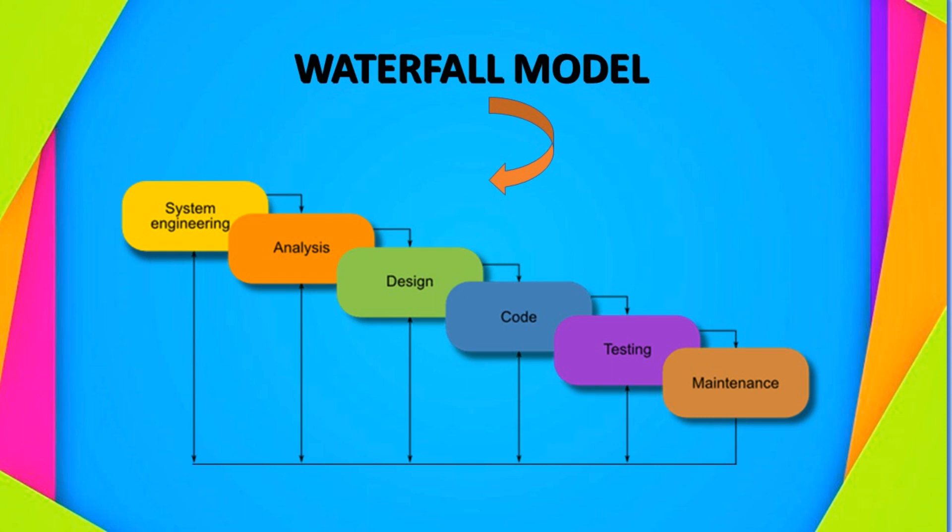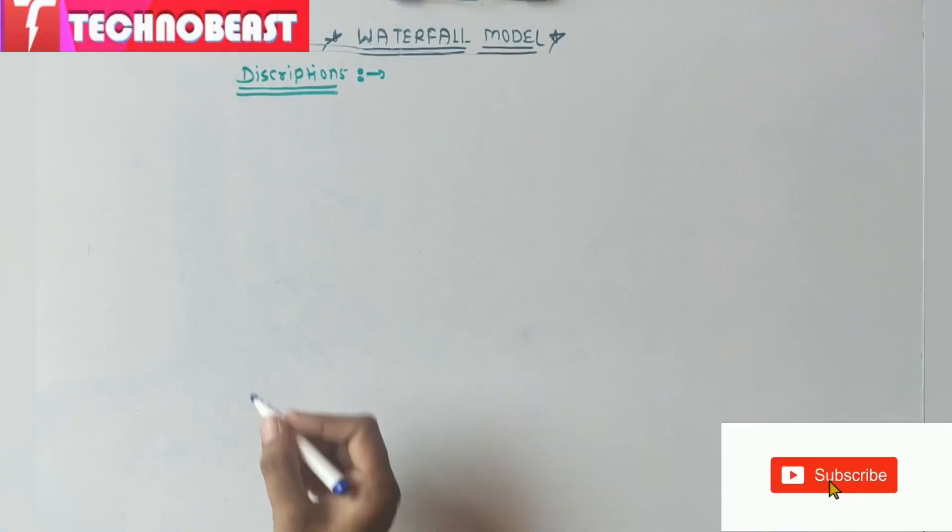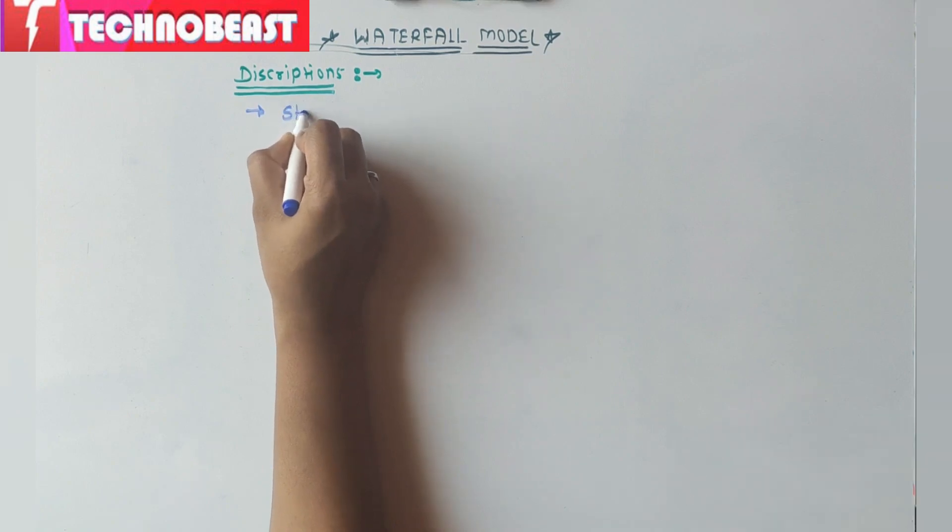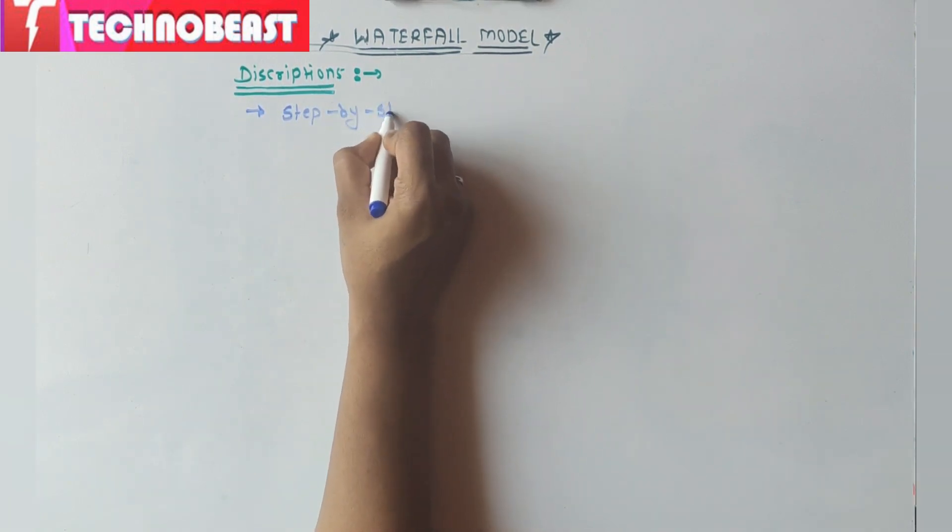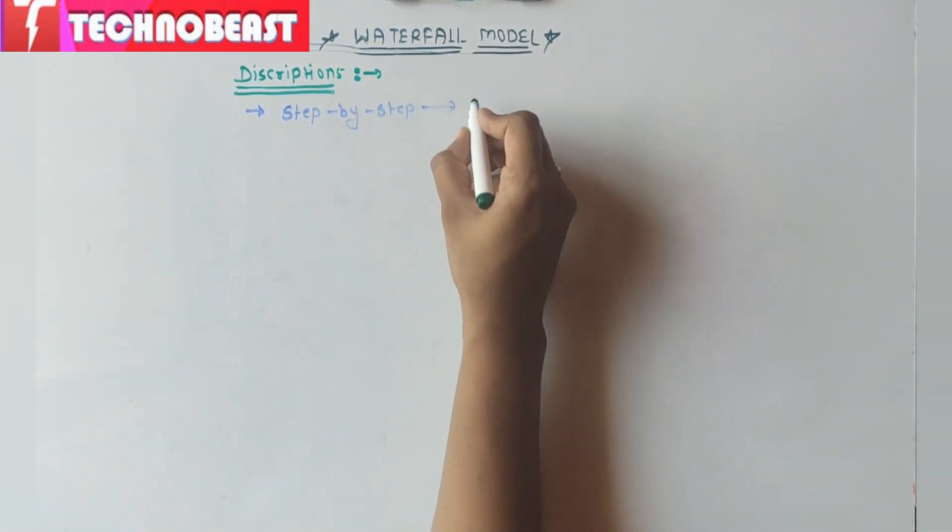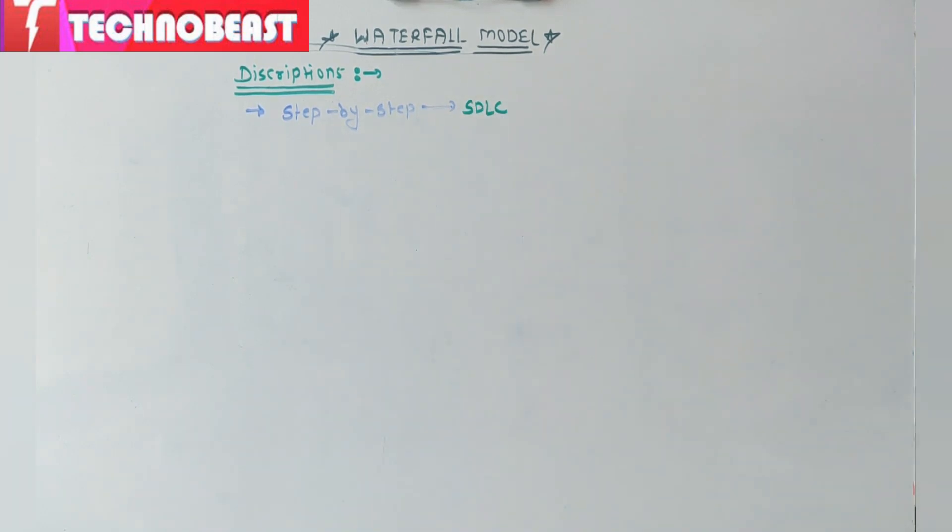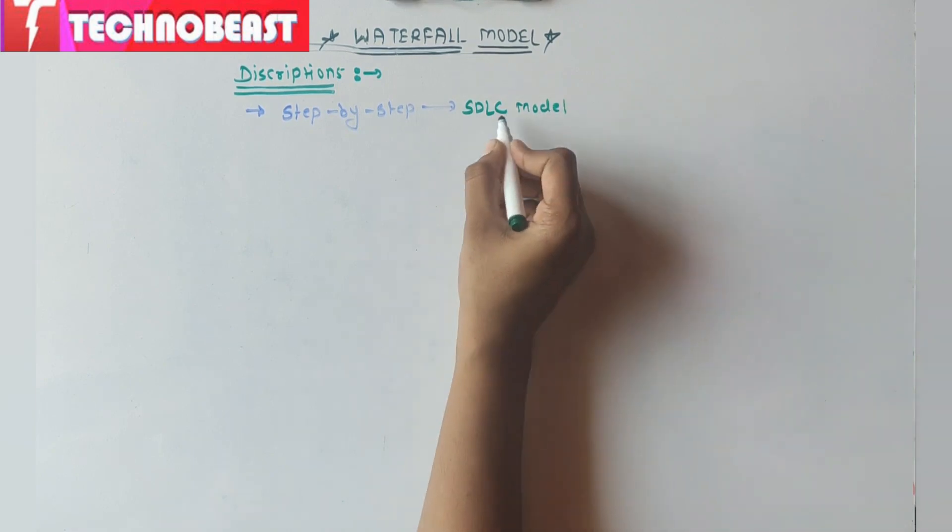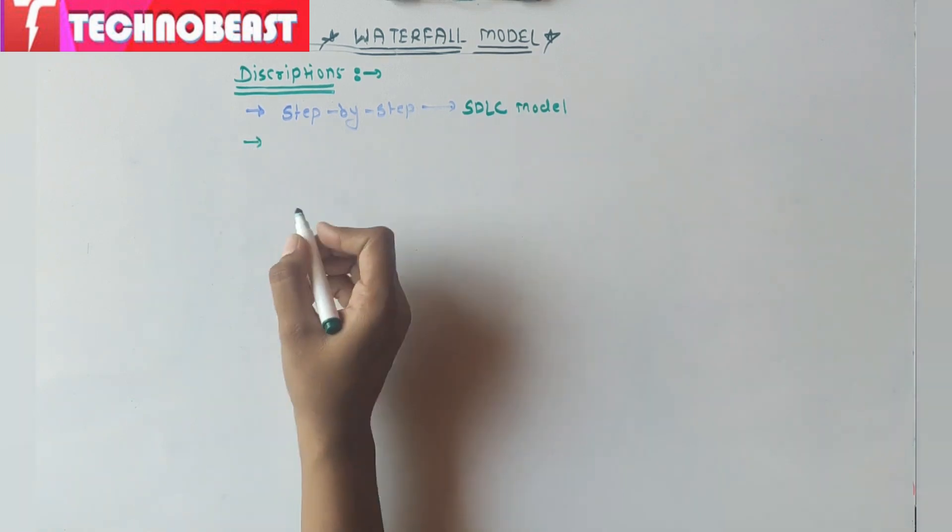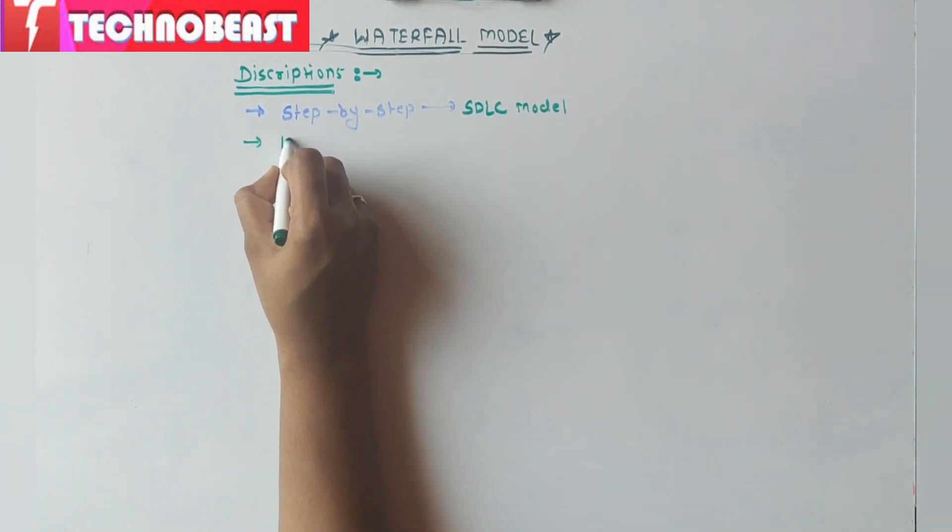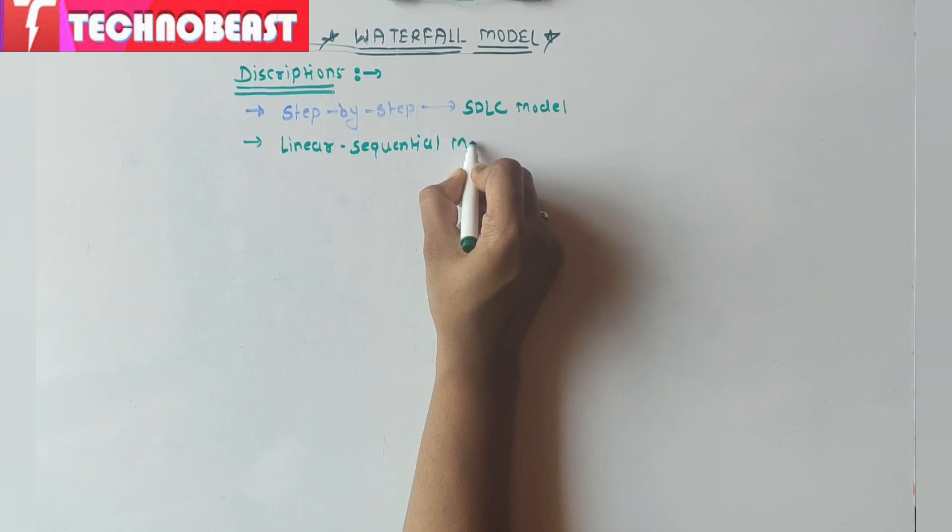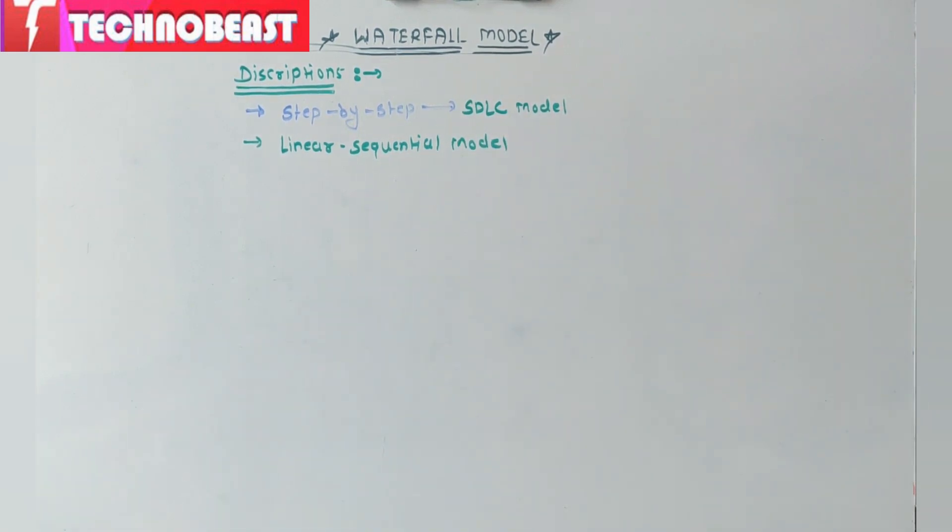So let's begin. The first one is waterfall model is step-by-step implementation of SDLC model. It is a step-by-step implementation of SDLC model, which follows the SDLC. Waterfall model is also called a linear sequential model.